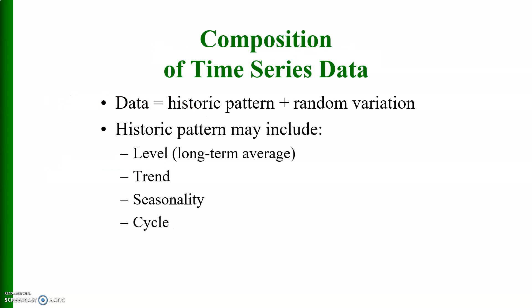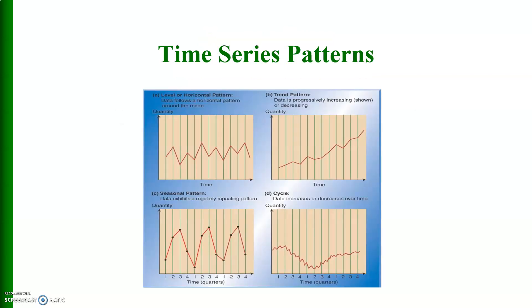Composition of time series data: time series data basically follow historic pattern plus random variation. Historic pattern may include level, which is a long-term average, or long-term trend, seasonal variation, cyclical variation, or irregular pattern.